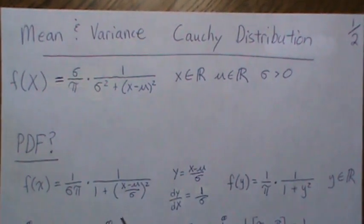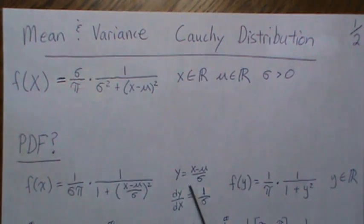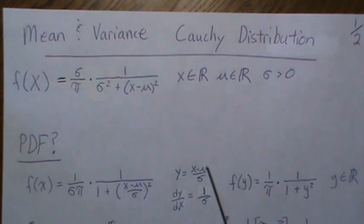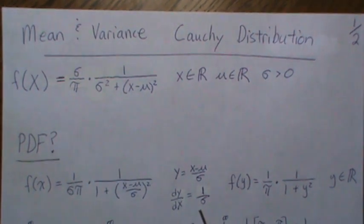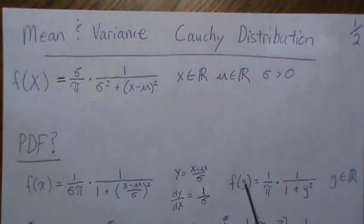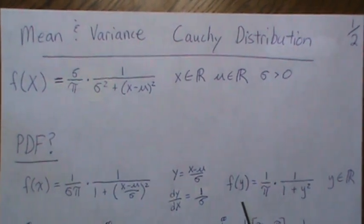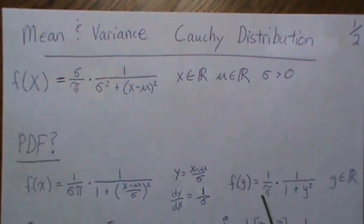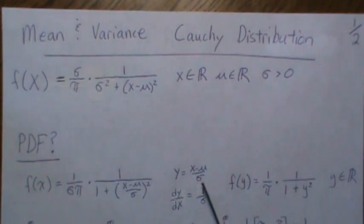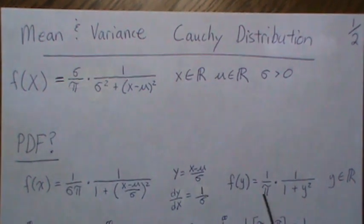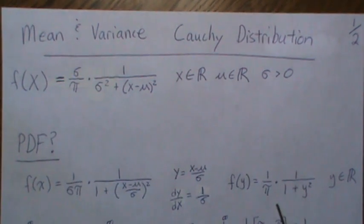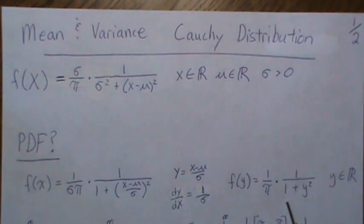Then I want to do a variable change for the rest of the video. Let's let y equal this quantity here, so dy/dx is one over sigma. Then when you plug that in to find the density of y you get this here, and this will be much easier to integrate. To find the mean and variance of X you can use this formula here which is straightforward.